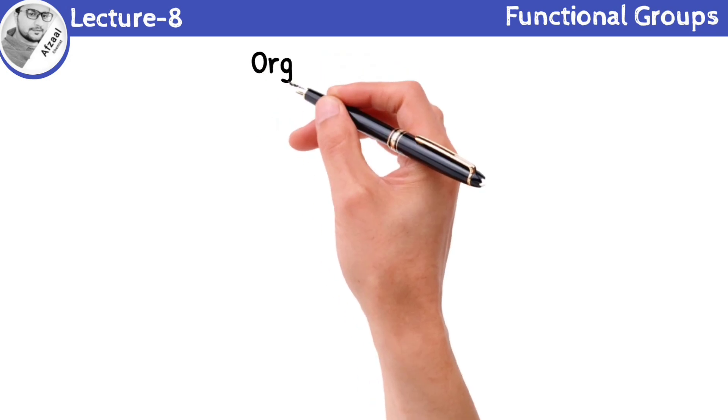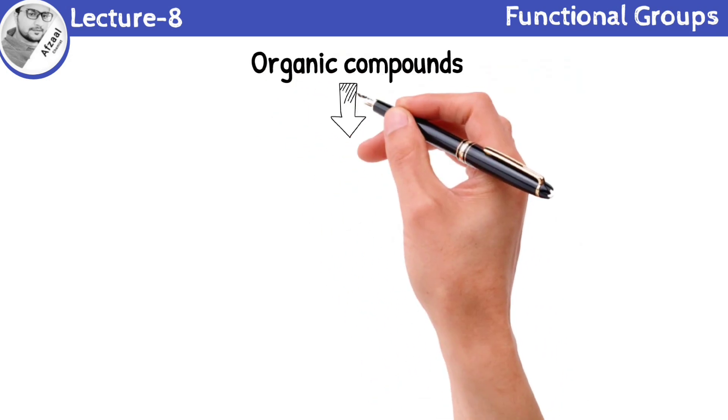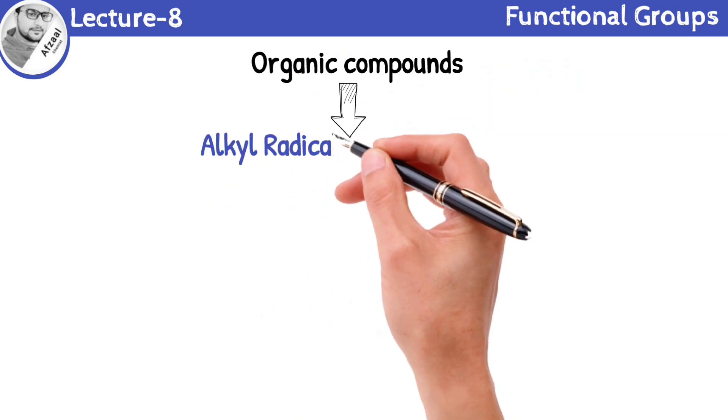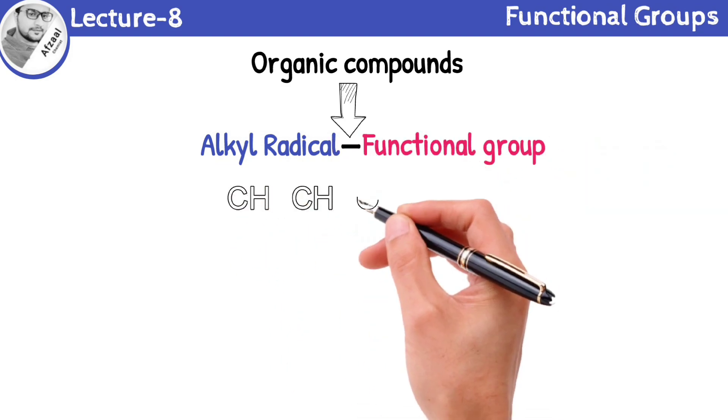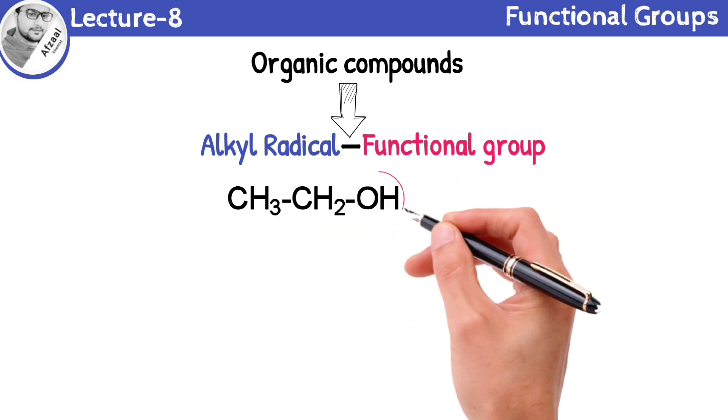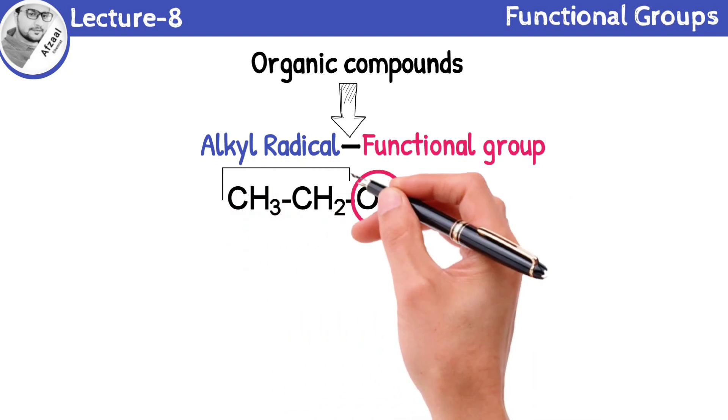Let's start with basics. Organic compounds consist of two main parts: the alkyl radical and the functional group. This organic compound contains OH as functional group and the remaining part is known as alkyl radical.